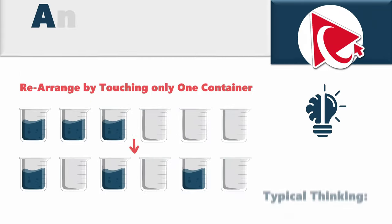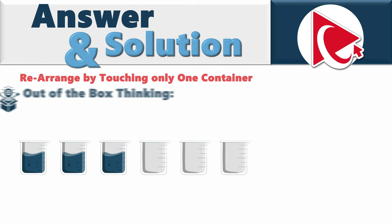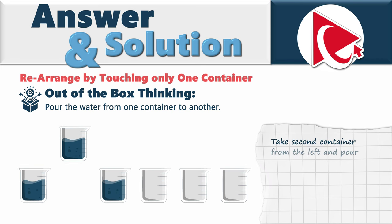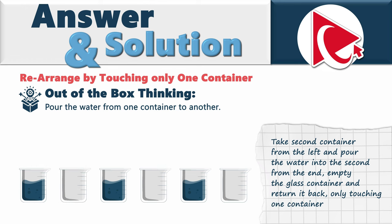The typical way of thinking is to move the glasses, but that requires touching two containers. To actually solve it, you need to think outside the box. The solution is to pour the water from one glass to another — take the second glass from the left and pour the water into the second container from the end, then return the empty glass, only touching one container.